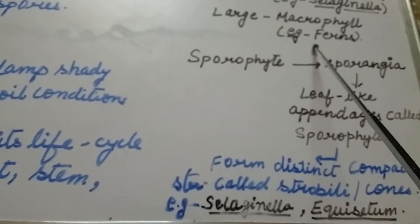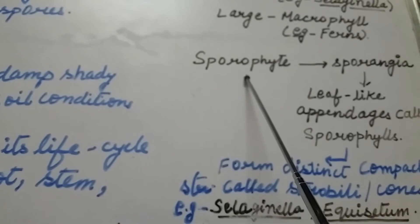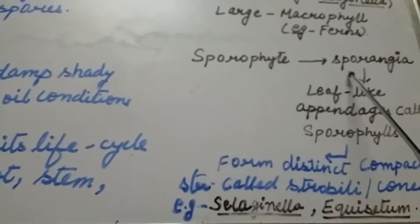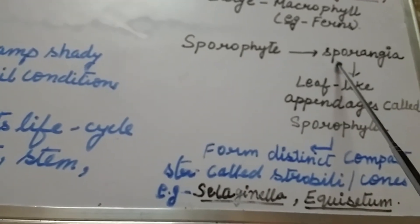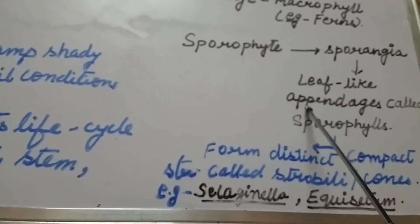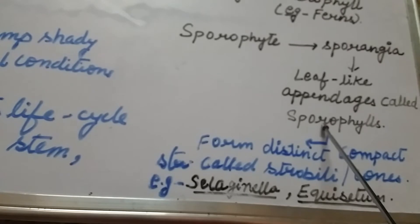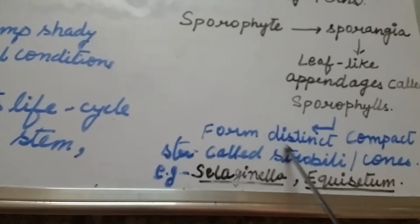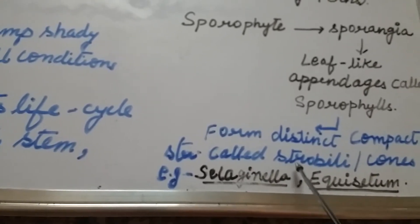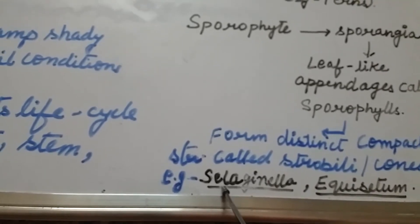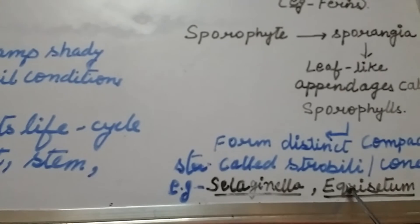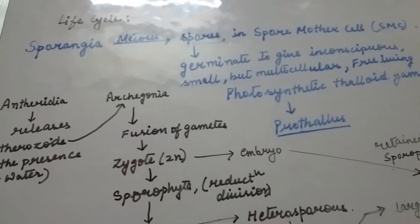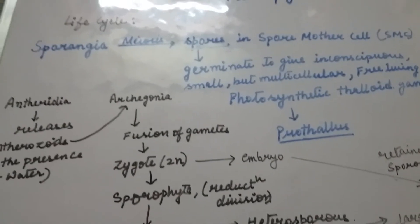The dominant phase of the life cycle of Pteridophytes is the sporophyte. These sporophytes bear sporangia that are subtended on leaf-like appendages called sporophylls. In some cases, the sporophylls form distinct compact structures called strobili or cones — for example, in the case of Selaginella and Equisetum, there is the presence of this compact structure, strobili.